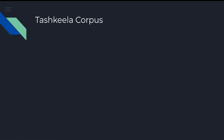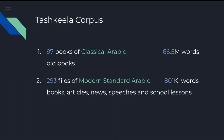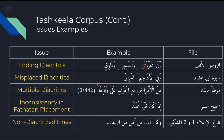Tashkila Corpus consists of 97 books of classical Arabic and 293 MSA files compiled from books, articles, news, speeches, and school lessons. The size of MSA is tiny compared to CA, where MSA has about 800,000 words only, while CA has 66.5 million words. With manual inspection, we found a lot of issues in Tashkila Corpus and inconsistencies even within the same lines, where two words might follow two different schools' conventions for diacritization.